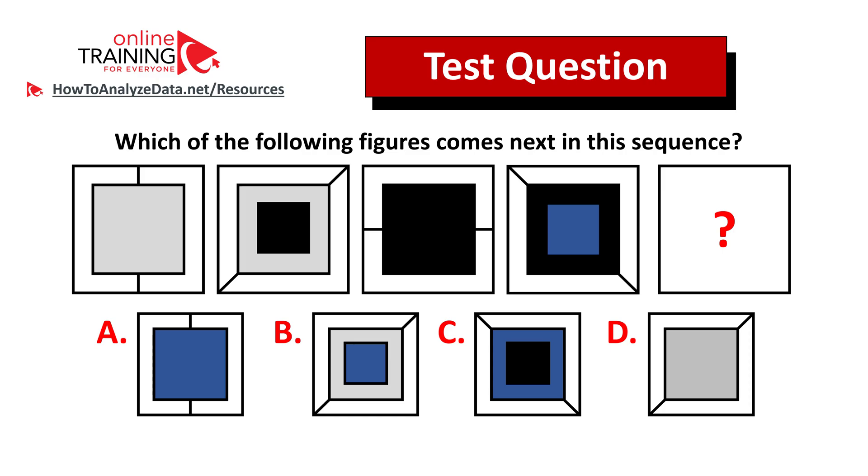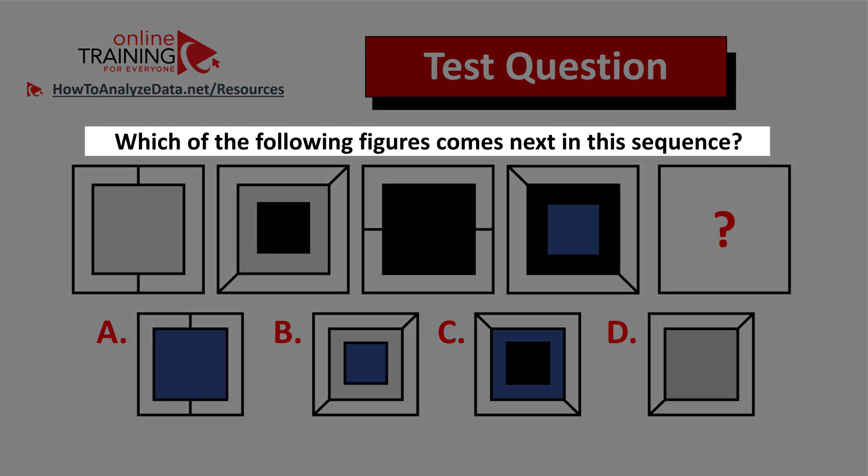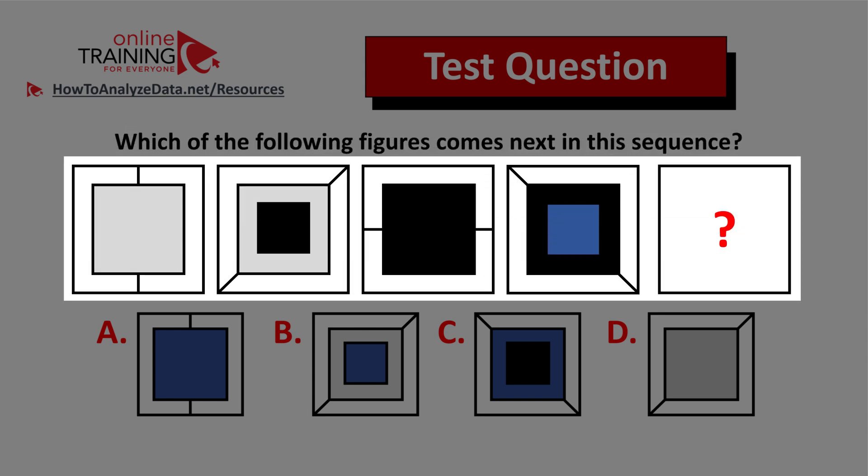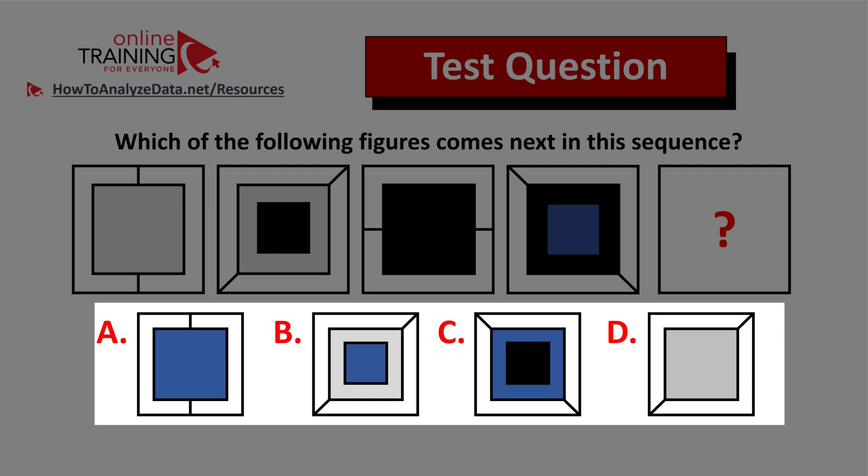Let me share with you a tricky question from the test. I have confidence though that you might figure out the answer. Here's the question: which of the following figures comes next in this sequence? You're presented with a sequence of five figures and figure number five is missing. You have four different choices to choose from: choices A, B, C, and D.